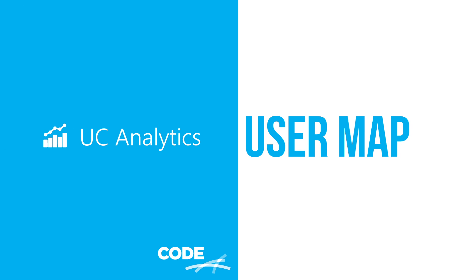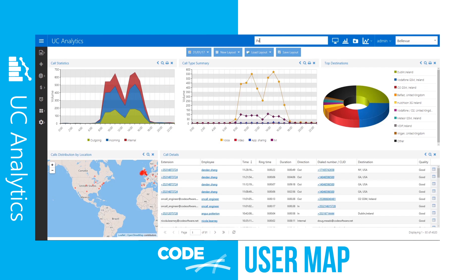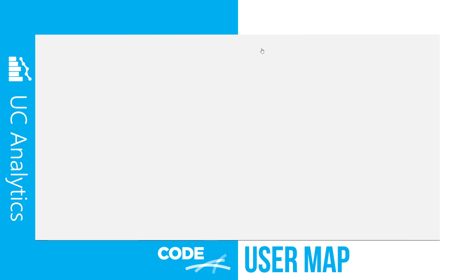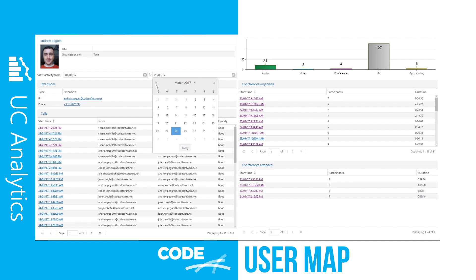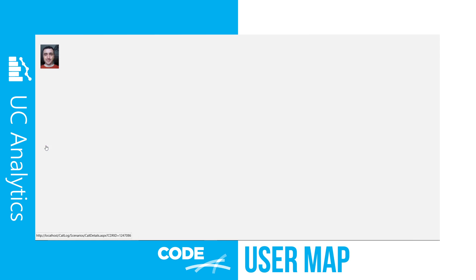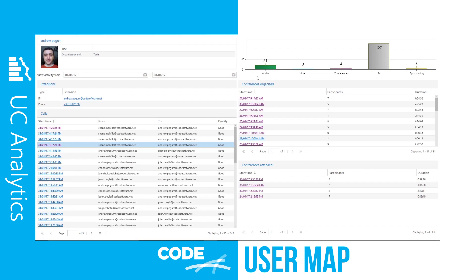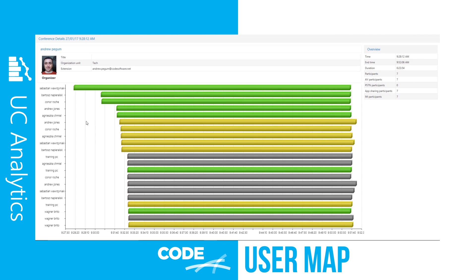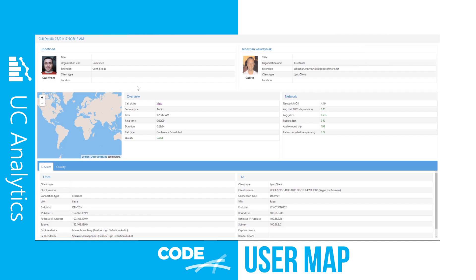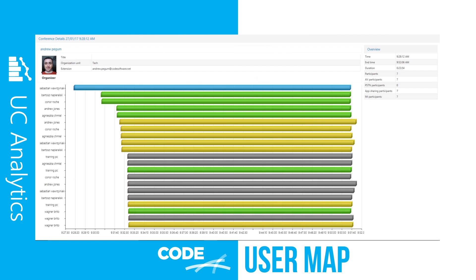The user map gives an insight into a selected user's adoption and associated call quality details. A user is selected, then a date range specified to see activity for that period. Details can be seen on voice and video calls, IM and app sharing, conferences organized and conferences attended. Selecting a call will open the call details monitor giving comprehensive quality and device details. The chart shows total volumes of service types for the selected date range. Selecting a conference opens a chart displaying all conference participants and color-coded service types used — voice, video, IM and app sharing. A summary of the conference call can be seen on the top right-hand side of the screen, and from the chart it is possible to click through to the call detail monitor.